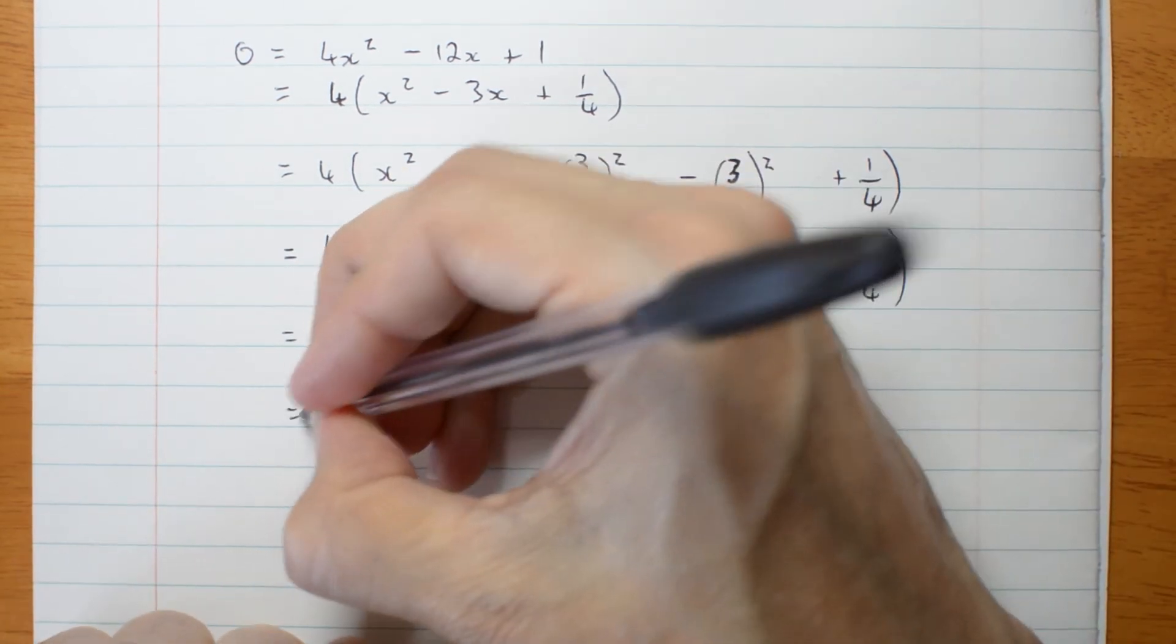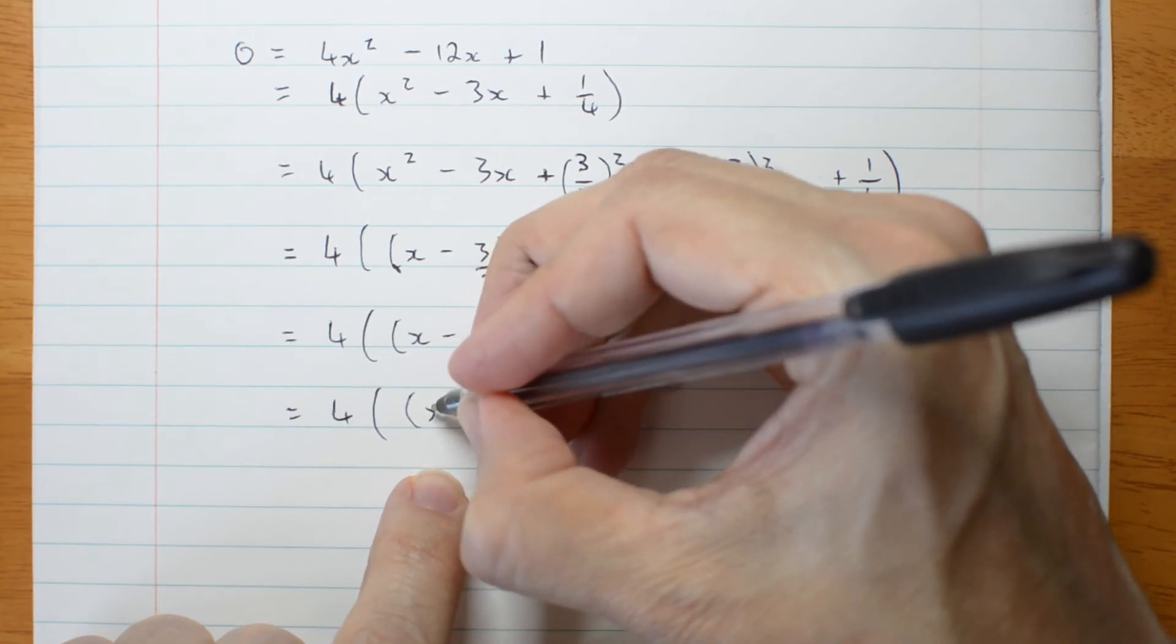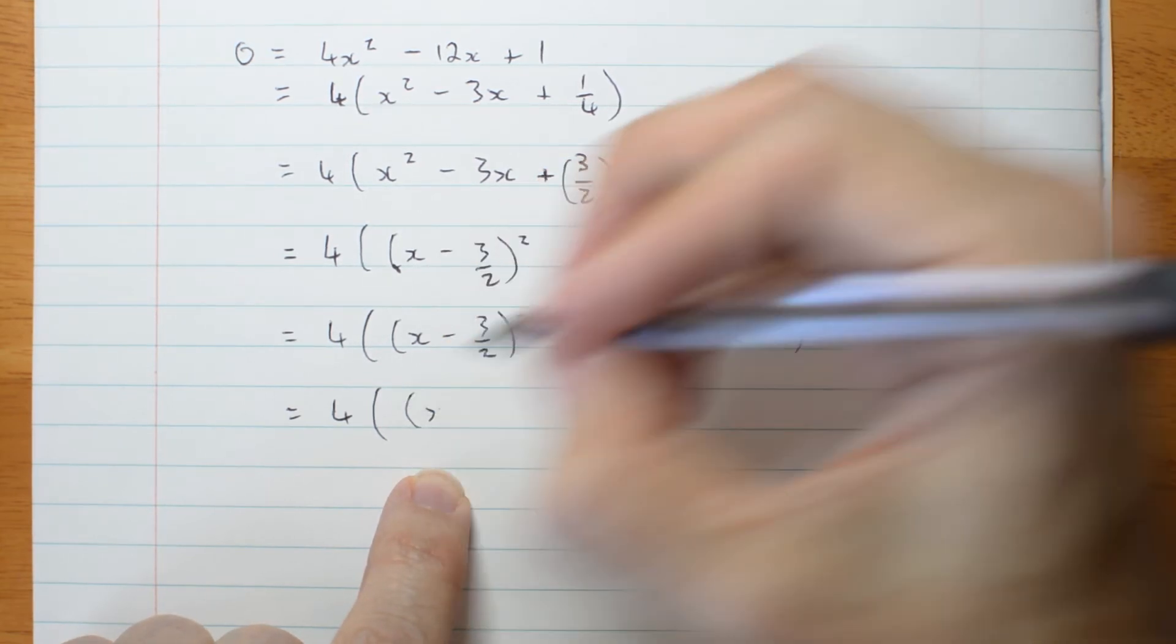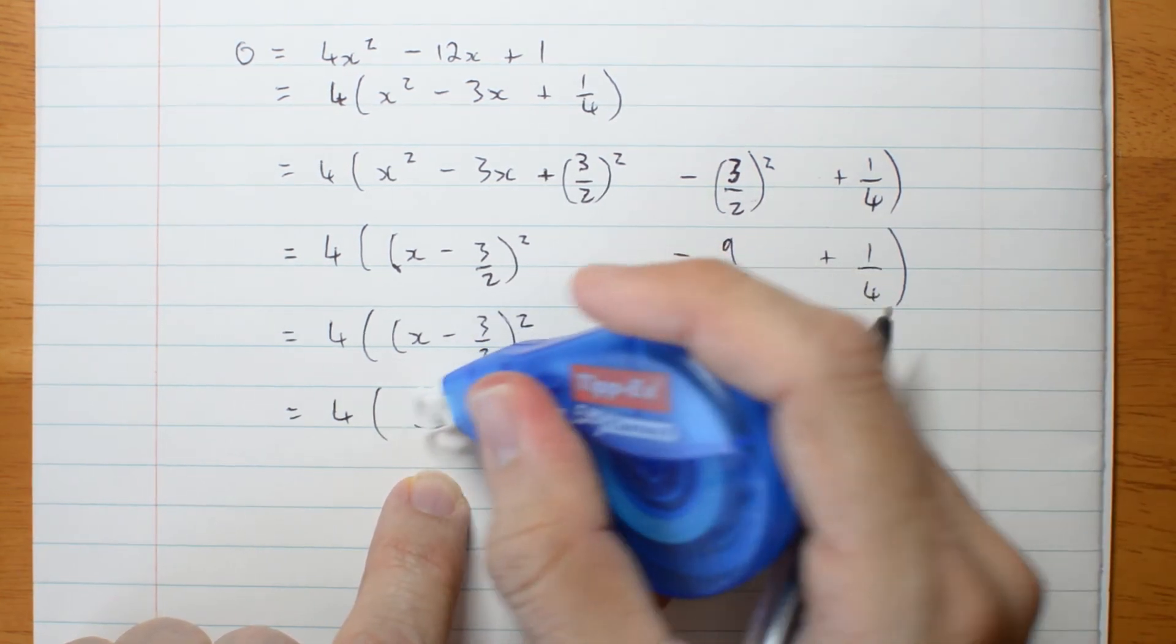Here's my difference of squares. 4 times. I don't actually need that. Let me try doing it without the brackets.